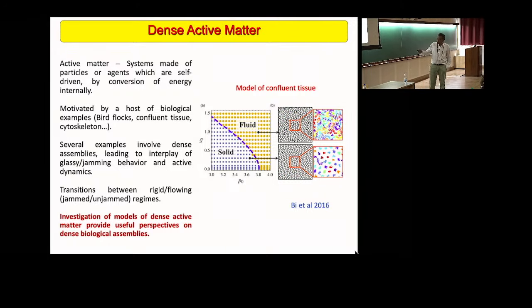Therefore, in particular, transitions between rigid and flowing regimes in the dynamics of these systems is of interest. The investigation of models of such dense active matter can provide useful perspectives on dense biological assemblies. Here is one example from the work of Max B et al., Christina included, which discussed the transitions from solid to fluid states in a model of confluent tissue.